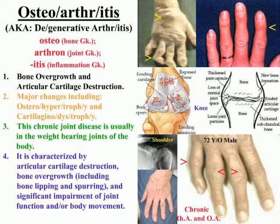bone overgrowth, which includes the lipping of bone and spur formation on bone, and significant impairment of joint function, or body movement.